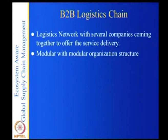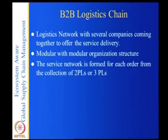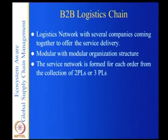In the logistics chain, there are warehouses that may be owned by somebody else, and truck companies may be owned by Ford or Toyota or different owners. Similarly, other services needed are all owned by different people. The service network is formed for each order — for a collection of 2PLs or 3PLs. Suppose an auto company wants to transfer components from somewhere in the United States to Detroit, or in India from Pune to Gurgaon near Delhi.